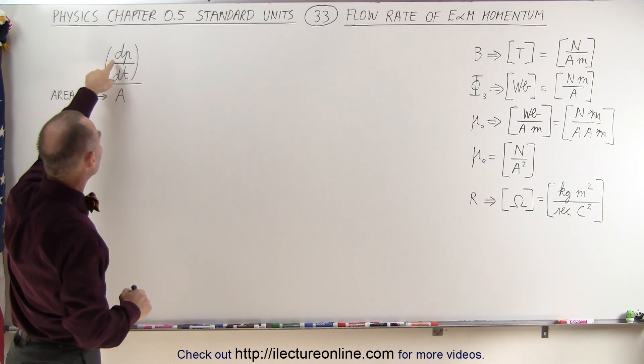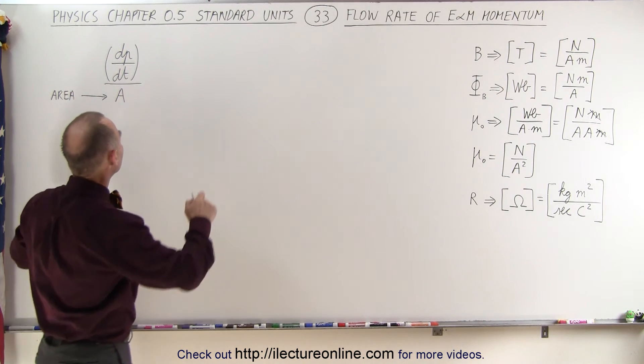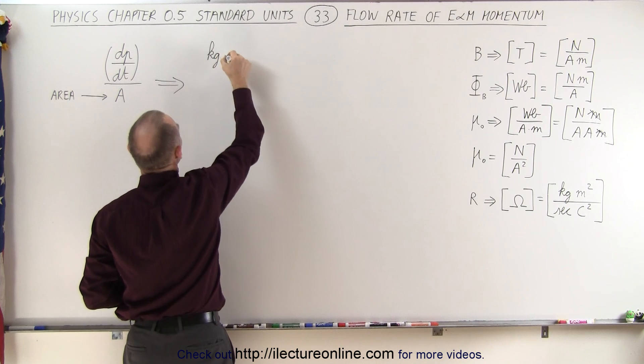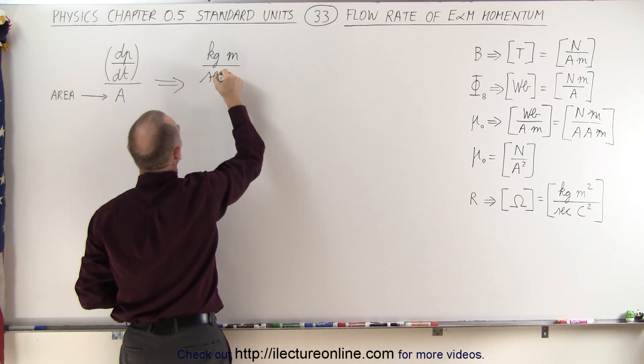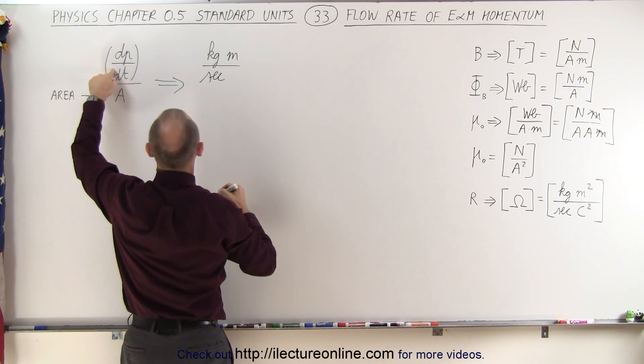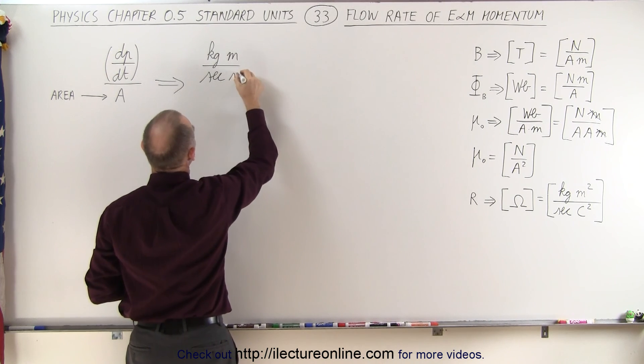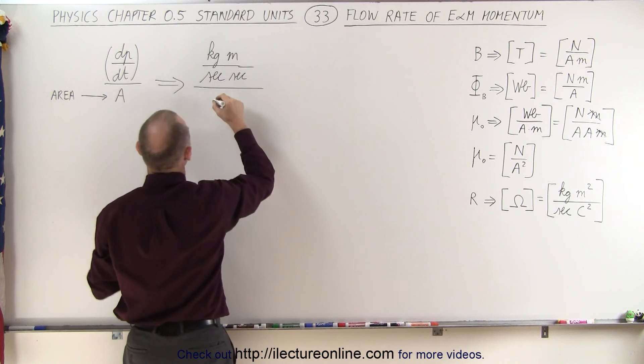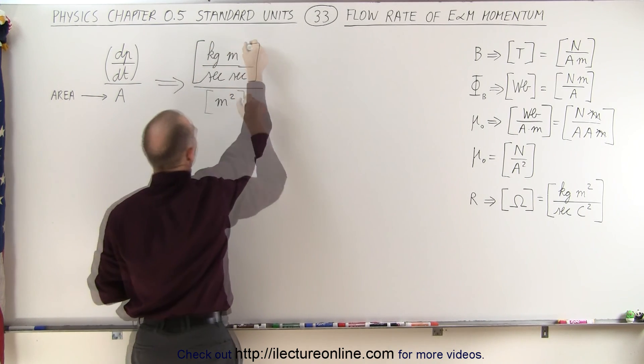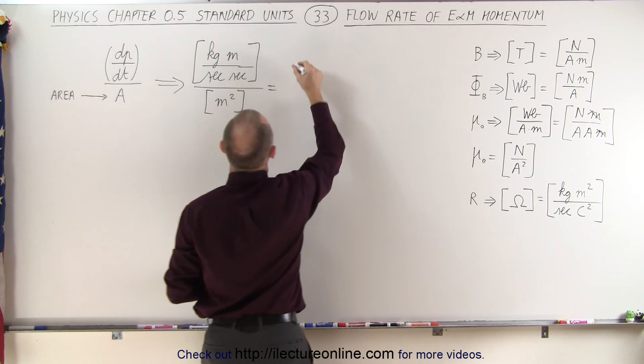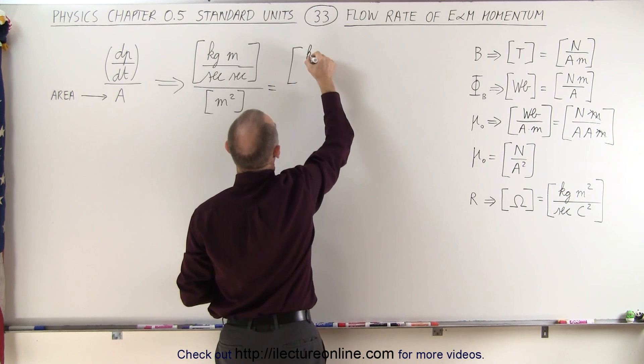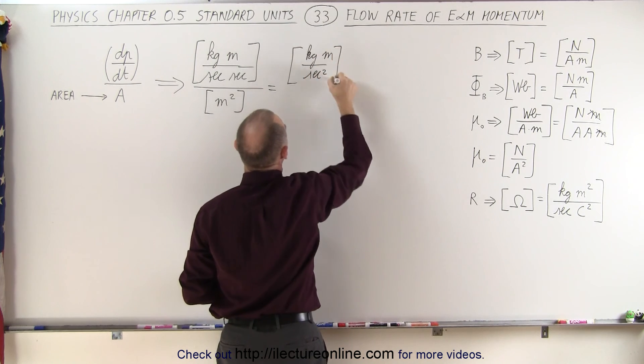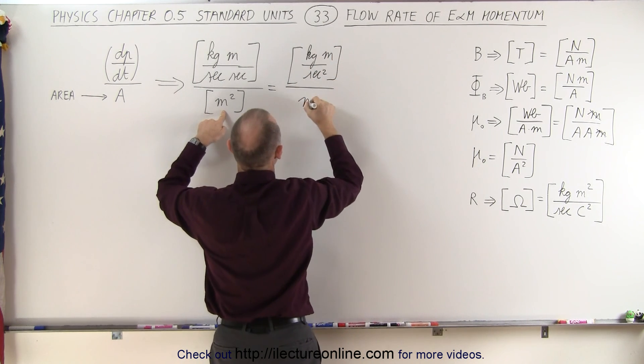First of all, let's plug in the units for momentum divided by time. So when we do that, momentum has units of kilograms meters per second. And then one over second would be the units of one over time, so we have per second per second. And we divide that by the unit for area, which is meters squared. Now this will simplify to kilograms meters per second squared, and we have meters squared.